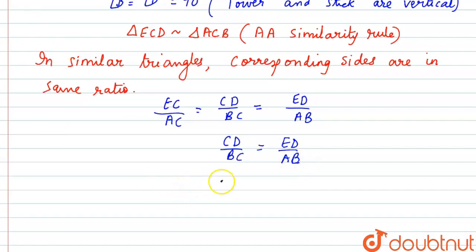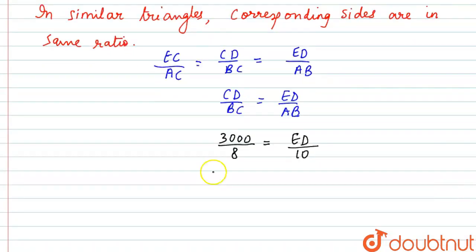CD is 3000 centimeters by BC is 8 centimeters equal to ED, we don't know the value, by AB is 10 centimeters. Now we will cross multiply.